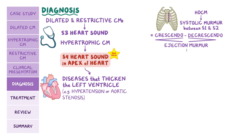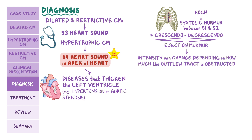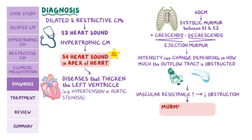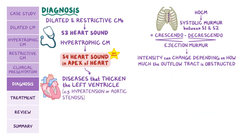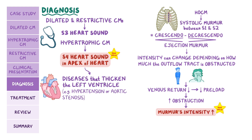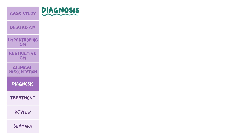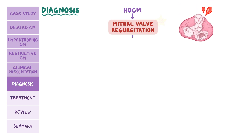The intensity of the HOCM murmur changes with various maneuvers depending on how much the outflow tract is obstructed. If the person squats down or does a hand grip maneuver, systemic vascular resistance increases, making it harder to eject blood and increasing afterload. The ventricle has more blood stretching it out, becoming less obstructed, and the murmur becomes less intense. If the person stands upright or does a Valsalva maneuver, venous return decreases, reducing preload, meaning less blood stretching the ventricle before ejection, so there is more obstruction and the murmur's intensity increases. Since HOCM is sometimes associated with mitral valve regurgitation, a holosystolic murmur lasting throughout systole may also be present.